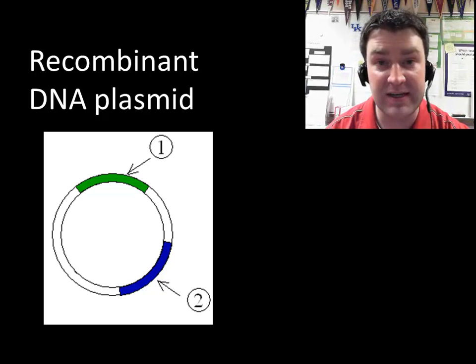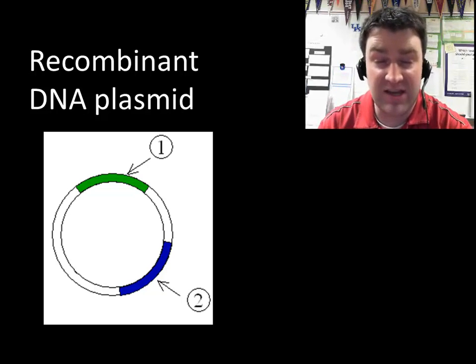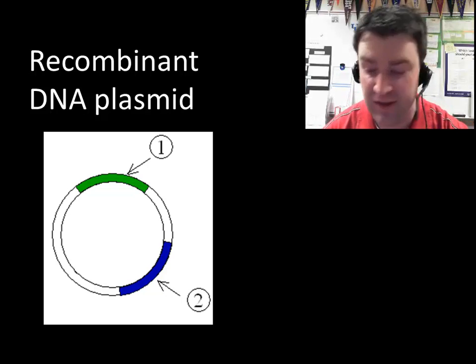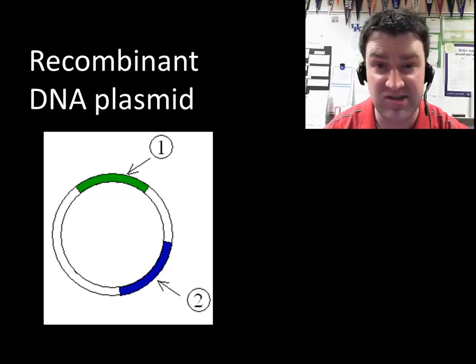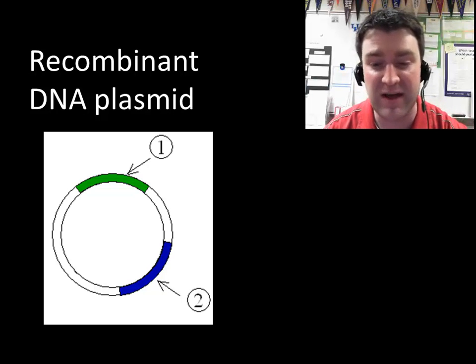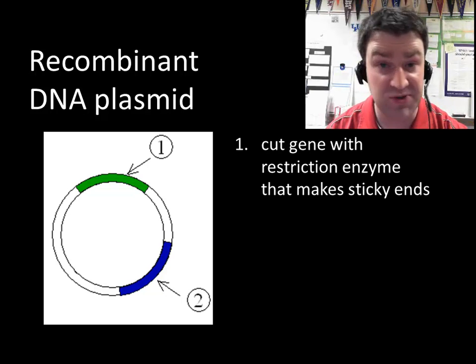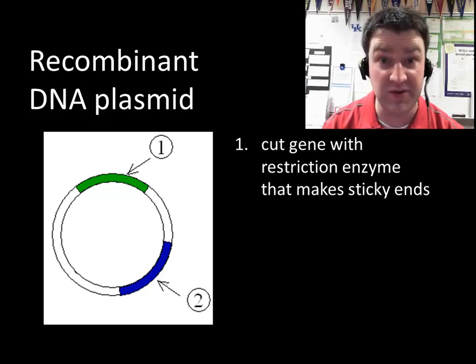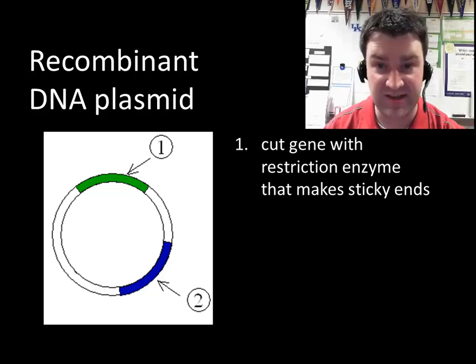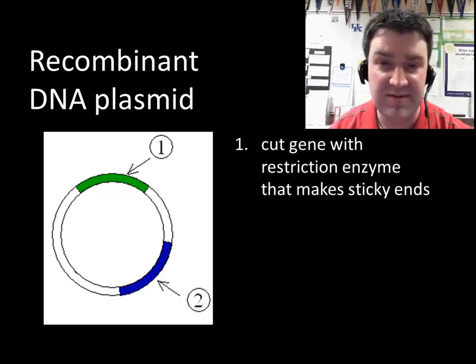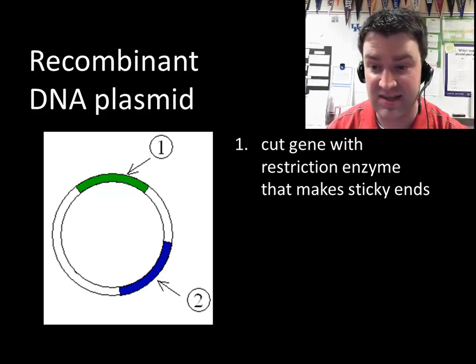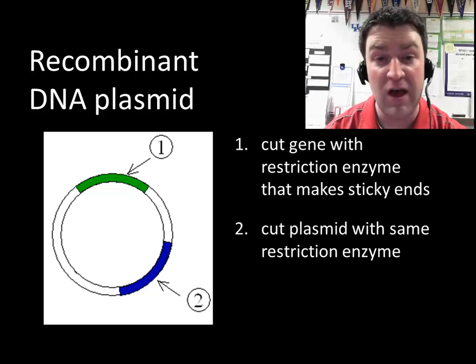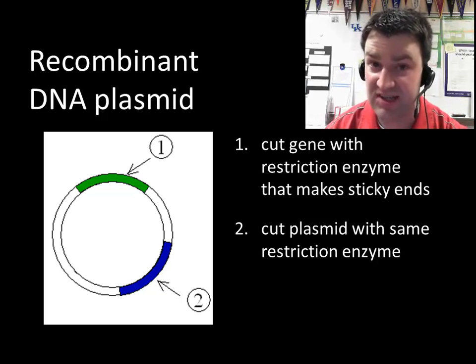So how did we make a genetically engineered bacterial plasmid to begin with? The biological supply company is just going to give us theirs, but let's just talk about the basic theory about how they might have created it. They need to first of all use restriction enzymes to cut the gene out of the source that we want to get those genes from. So whatever organism naturally has those genes we're going to cut them with restriction enzymes and they need to be restriction enzymes that make sticky ends.